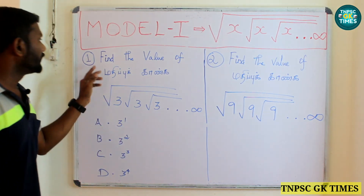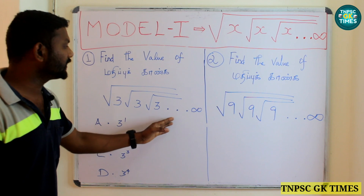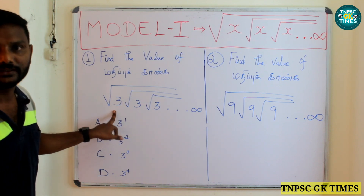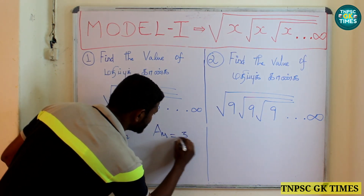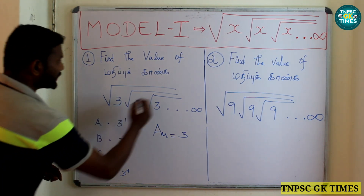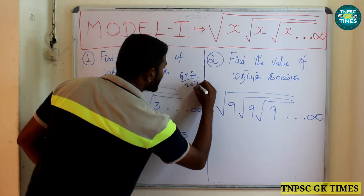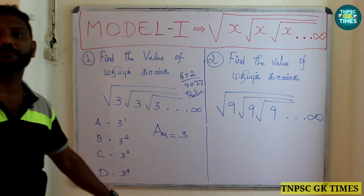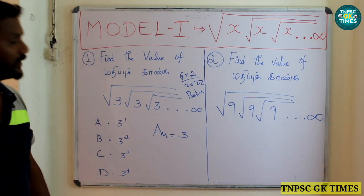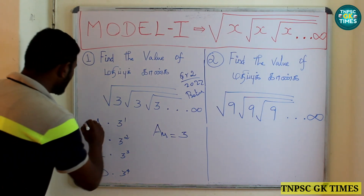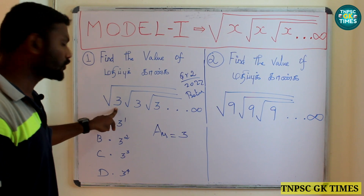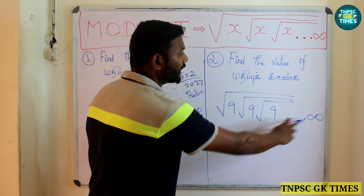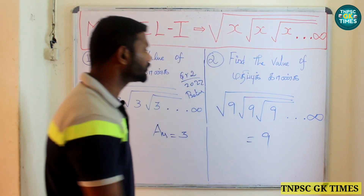Let's talk about the example. Find the value of square root of 3, square root of 3, square root of 3, up to infinity. In the exam they give options like 3 power 1, 3 power 2, 3 power 3, 3 power 4 to confuse us, but the answer is simply 3, that is 3 power 1. Similarly, square root of 9, square root of 9, up to infinity — the answer is 9, which is the term inside the square root.